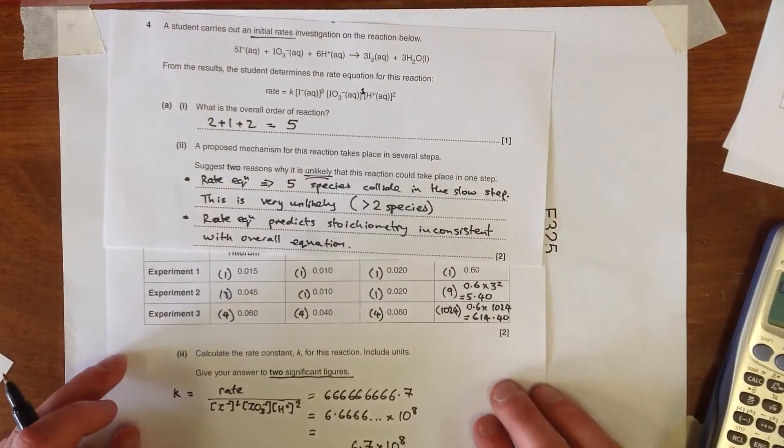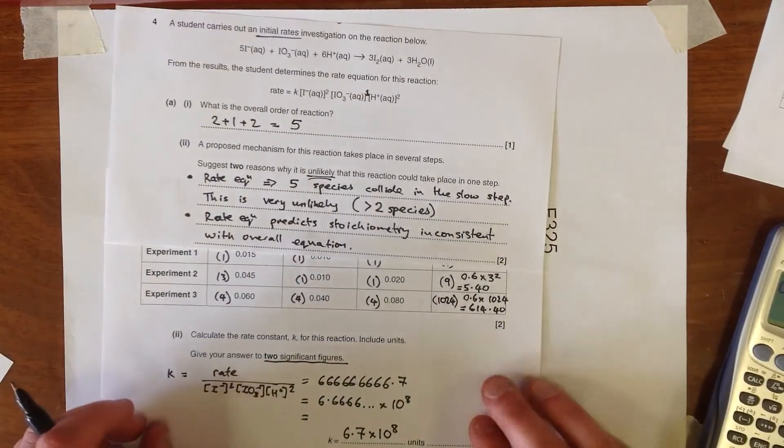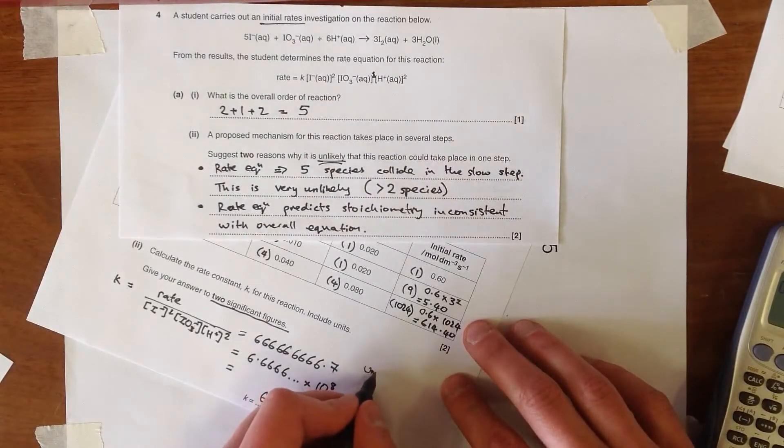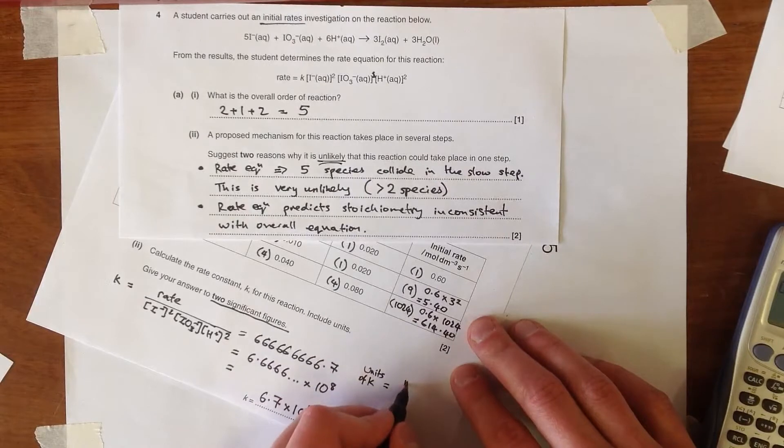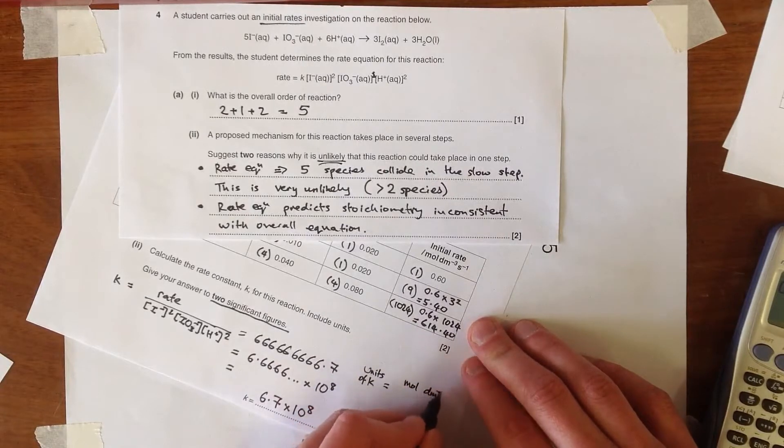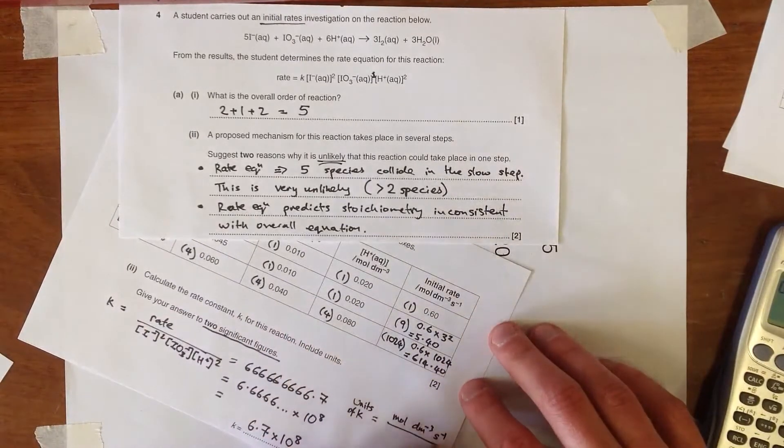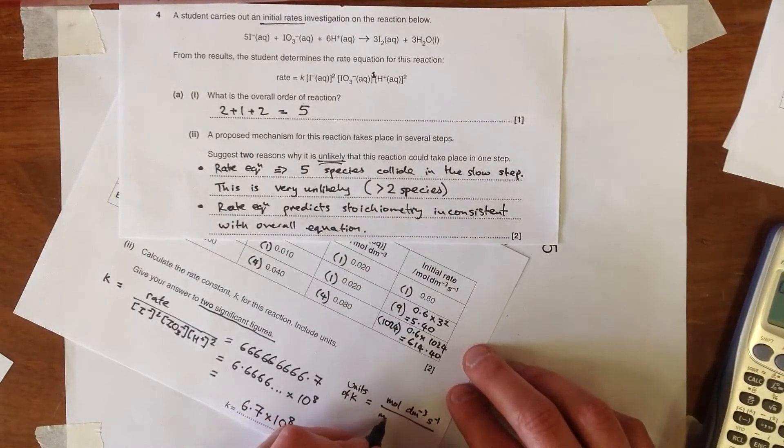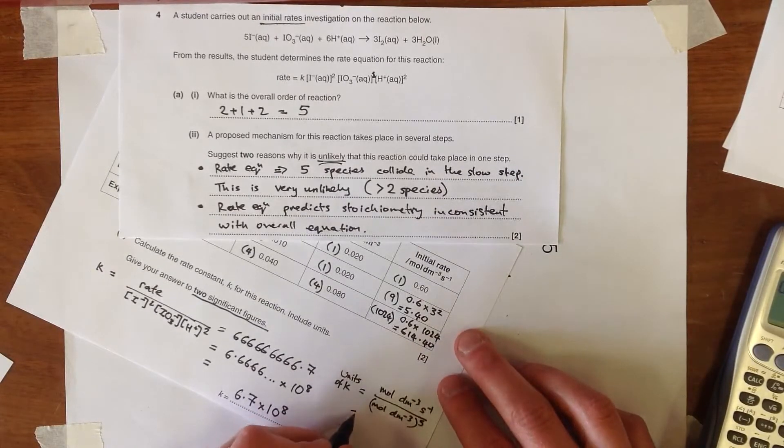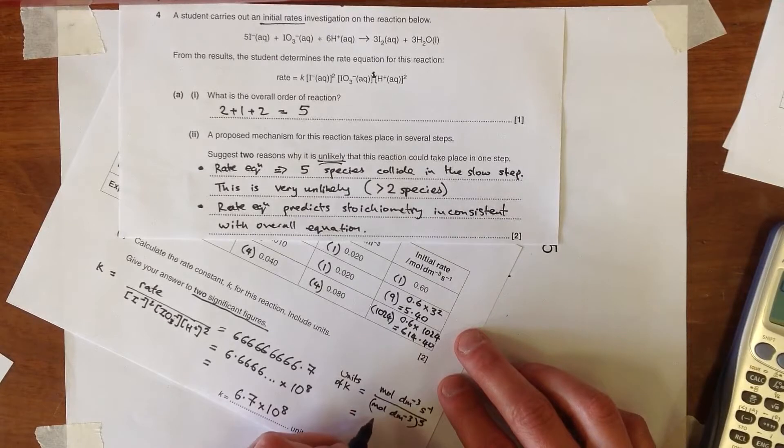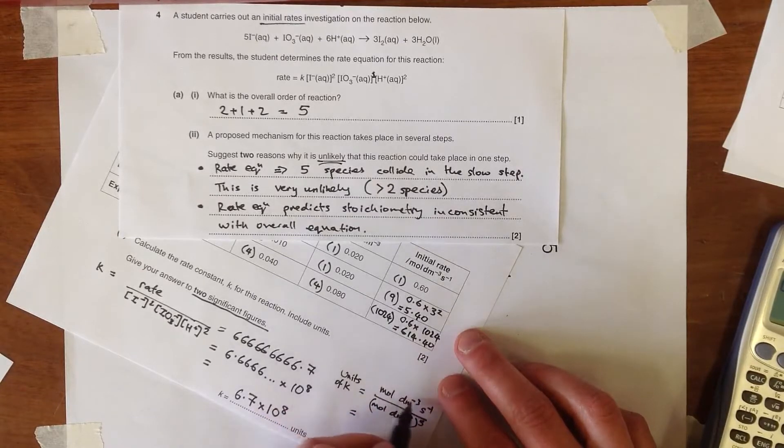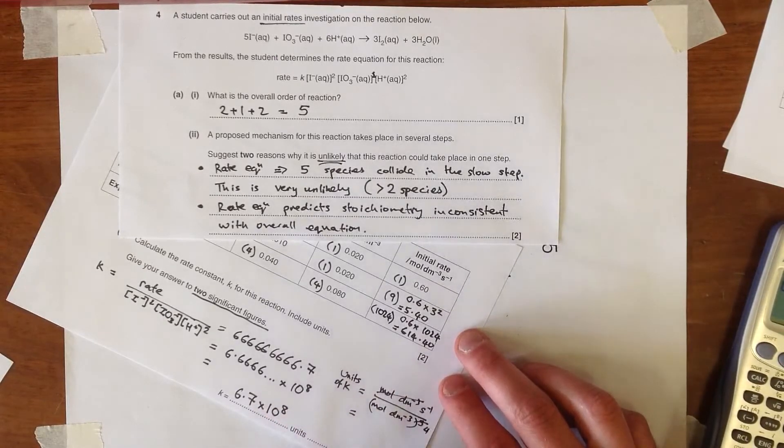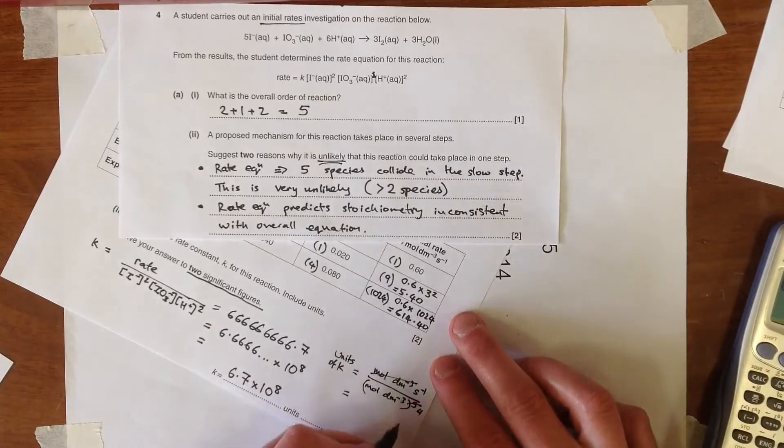And much easier to work in standard form, two significant figures. Now in terms of the units for this, what we've got here is the rate, which is in moles per decimetre cubed per second, as we've been told here, and we've essentially got five concentrations multiplied together on the bottom. So we're going to have moles per decimetre cubed raised to the power 5, which, if we write it down, is essentially going to cancel with one of these moles per decimetre cubed, and that's going to be the 4. So don't forget the per second.